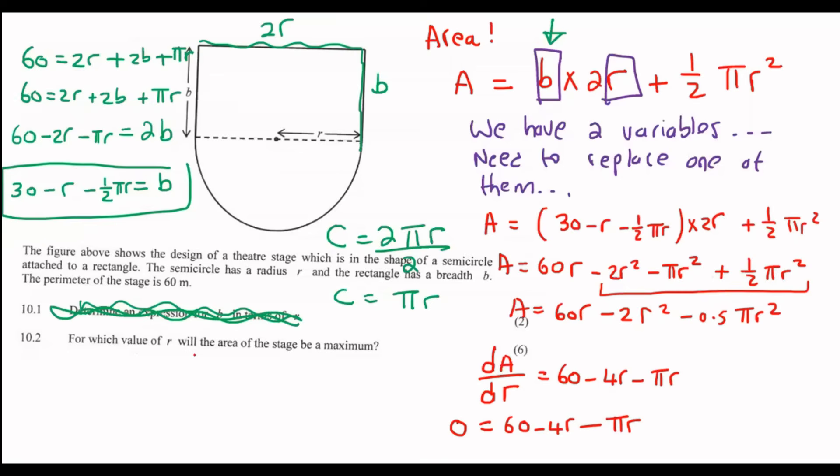And then I'm going to take the 4R and the πR over. So 4R + πR = 60. You can take out R as a common factor if you want. And then R would be equal to 60 divided by (4 + π). And so the R value should be 8.40 meters.